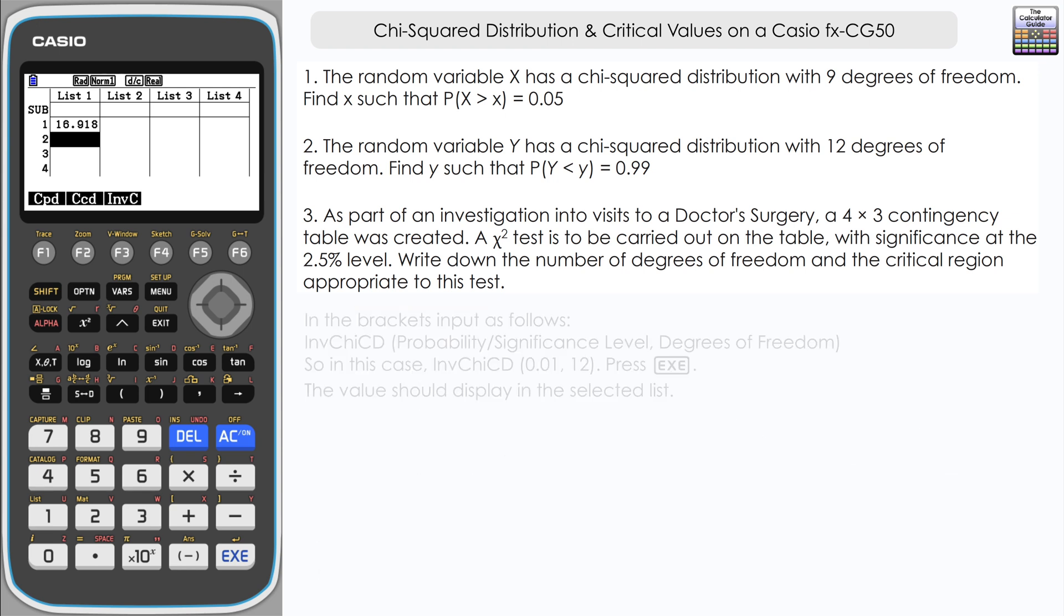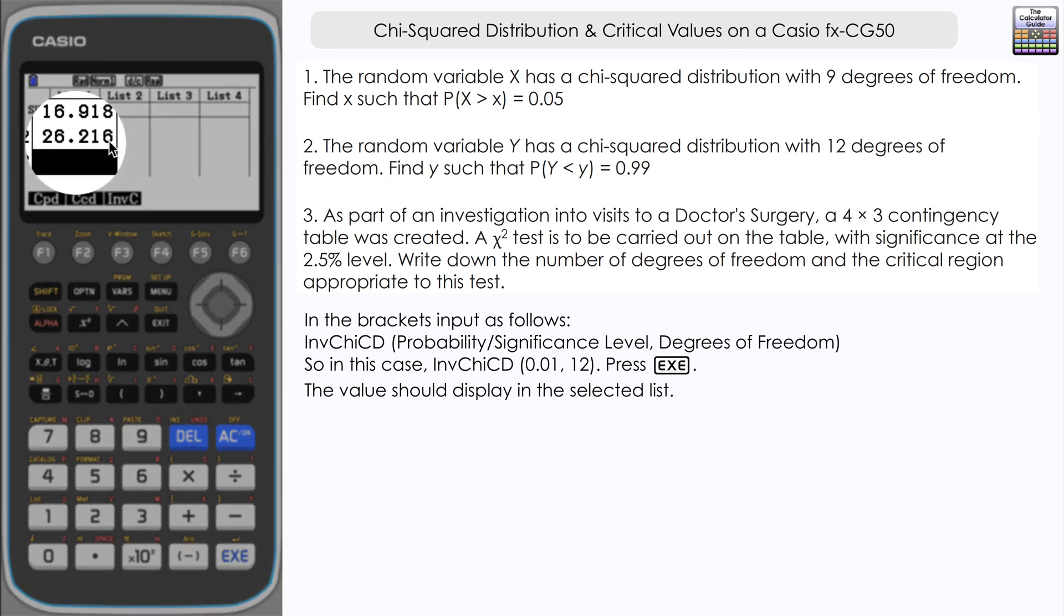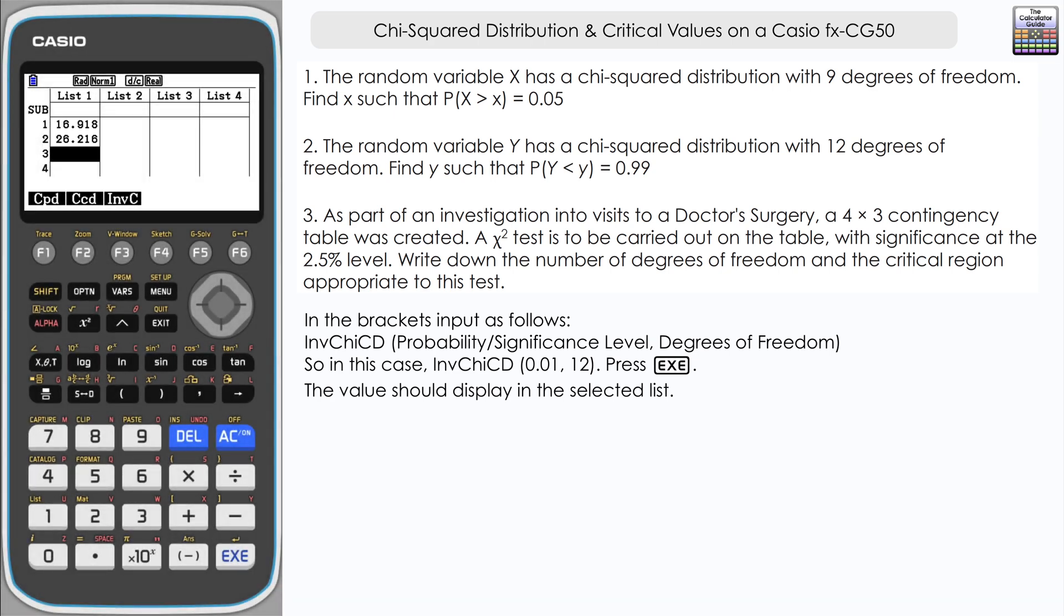So let's try again. We've got everything ready now, so we're straight on for inverse chi, F3. And then remember it's 0.01, comma, and then we've got the degrees of freedom which is 12. Close brackets, execute, and in the next row there on list one, we've got our value 26.216.